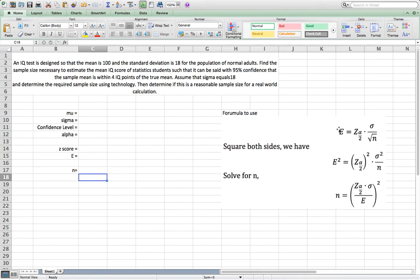So the formula we will use is based on this formula: margin error equals z alpha over 2 multiplied by sigma over square root of n, where n is the sample size, sigma is the standard deviation of population, e is the margin error, and alpha is 1 minus confidence level.